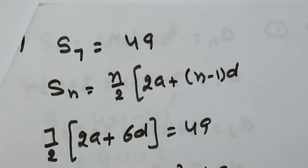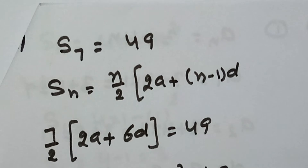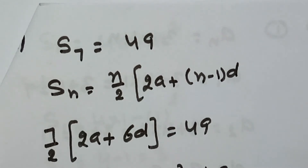Students, here in this question it is given the sum of 7 terms of an AP is 49, sum of 17 terms of an AP is 289. Find the sum of its N terms.